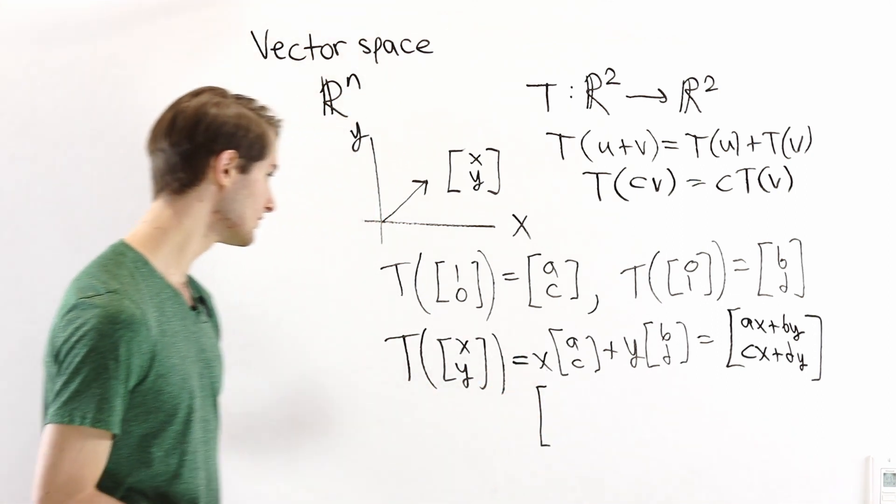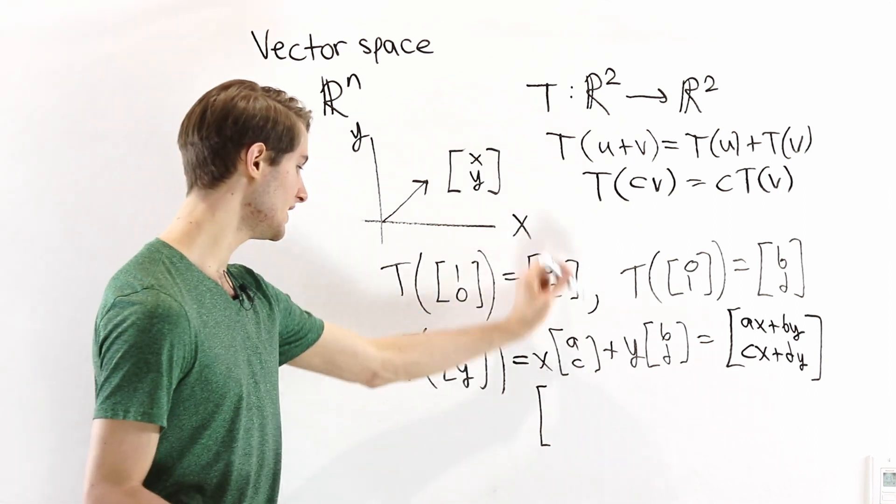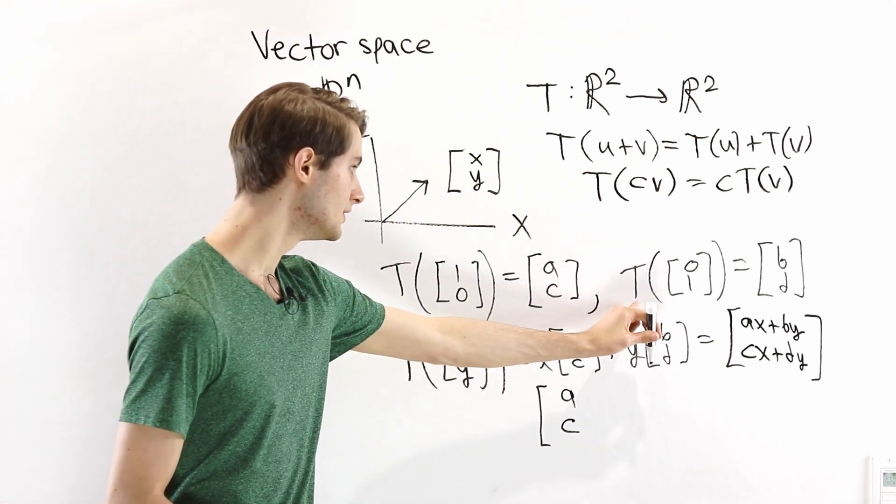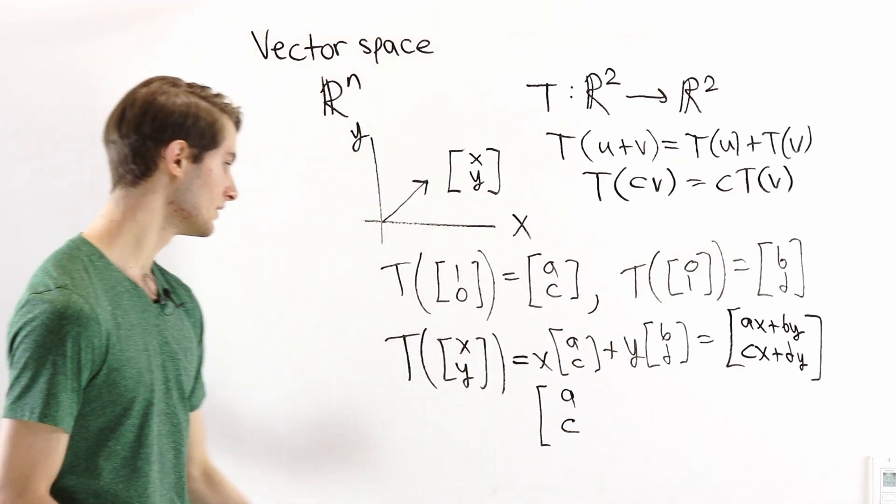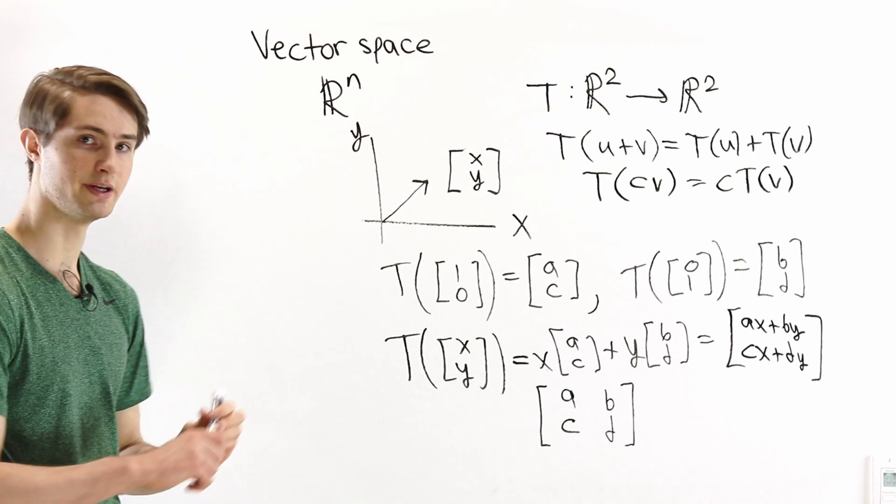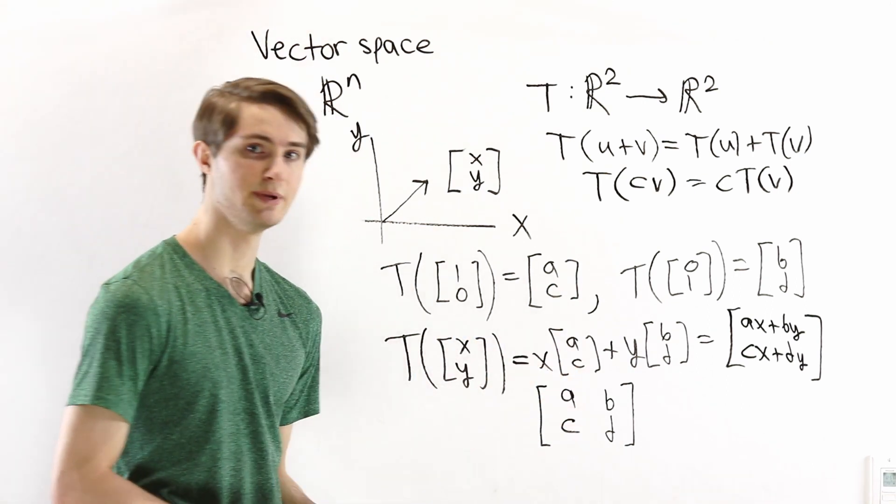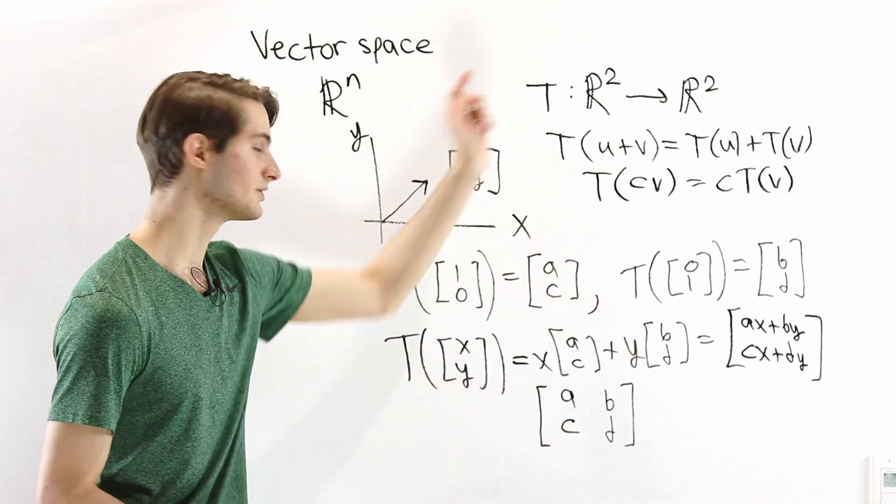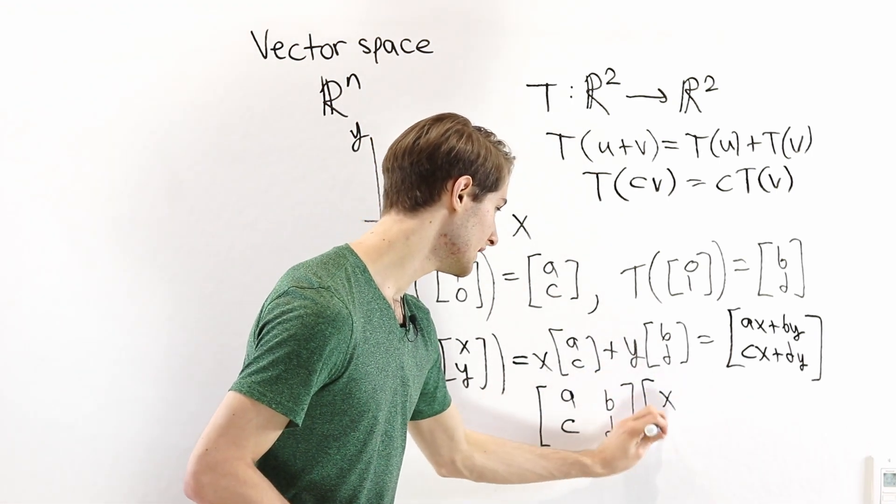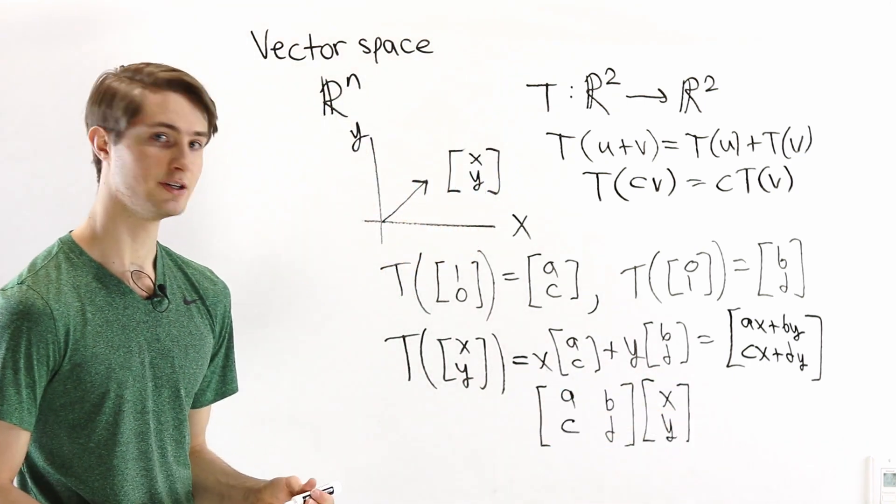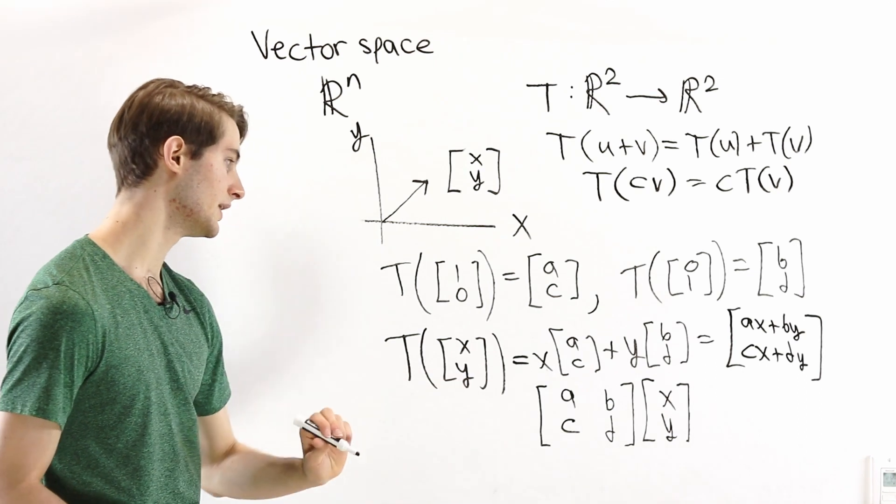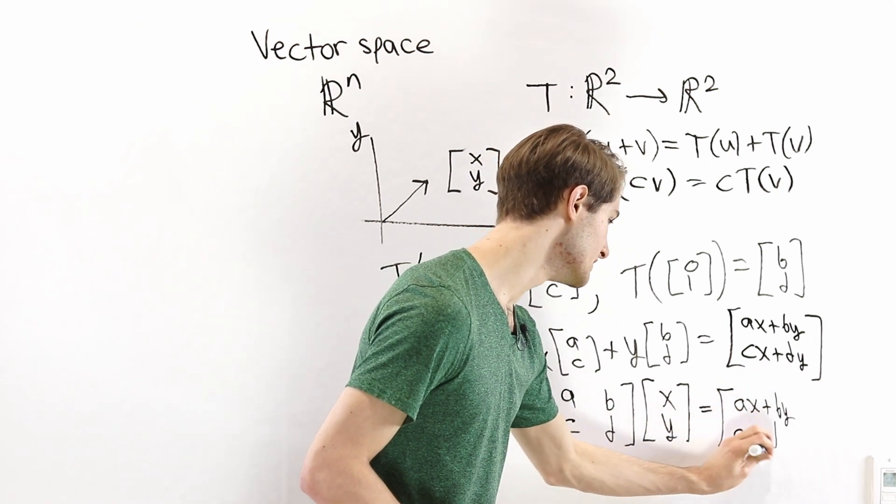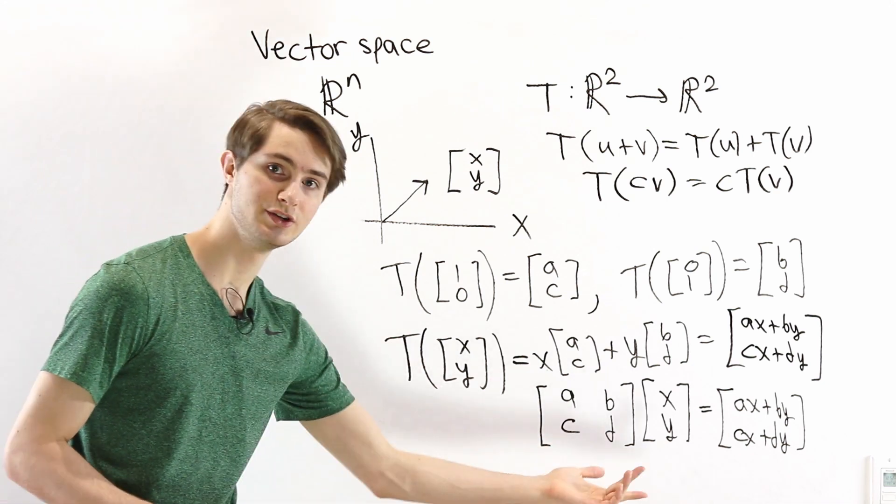And the matrix tells us what is the output at 1, 0, and what is the output at 0, 1. So here's how we use a matrix to describe a linear transformation like this. We open our bracket, and then first we look at T of 1, 0, which equals a, c. So the first thing we write down is a, c as a vector right here. We also know T of 0, 1 equals b, d, and so we put that right over here as the second column in our matrix. And so if someone looks at this matrix, they immediately know what is the linear transformation, because this matrix multiplication is really talking about applying T of x, y, and we just showed that equals ax plus by, cx plus dy.